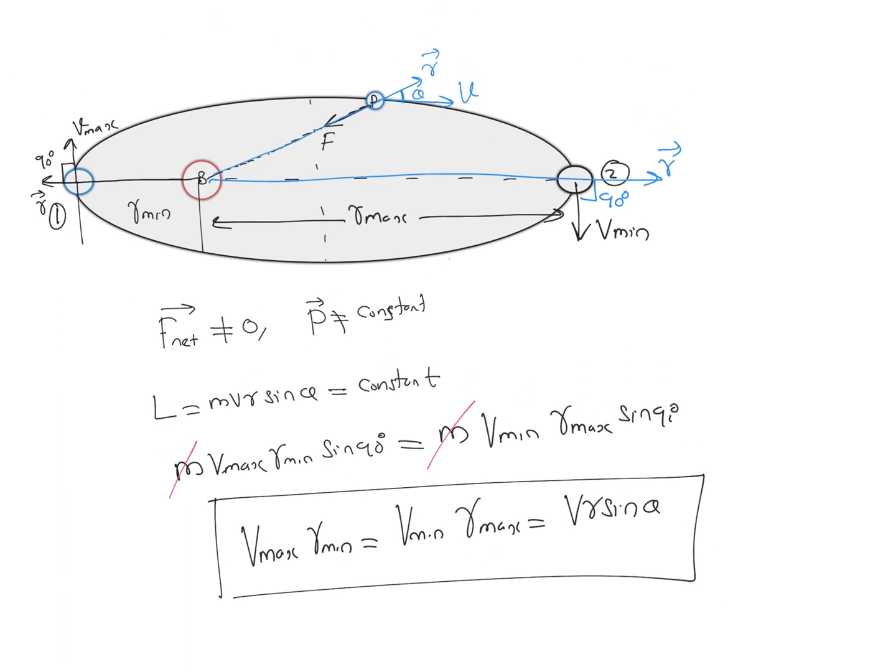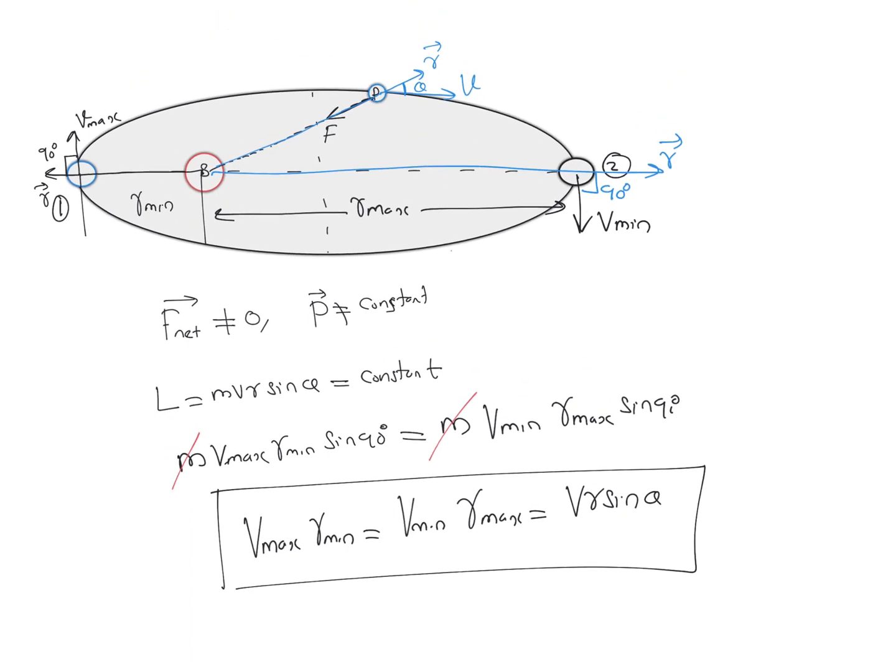So by using conservation of angular momentum we can find the relation between velocity and radius, or the position vector with respect to the sun. In planetary motion around the sun, the angular momentum of the planet is conserved with respect to an axis passing through the center of the sun, because the net torque is equal to zero.